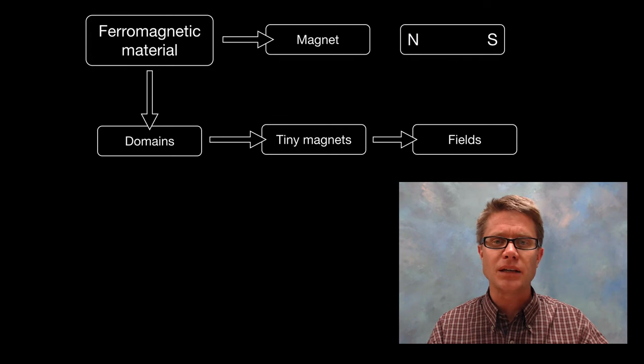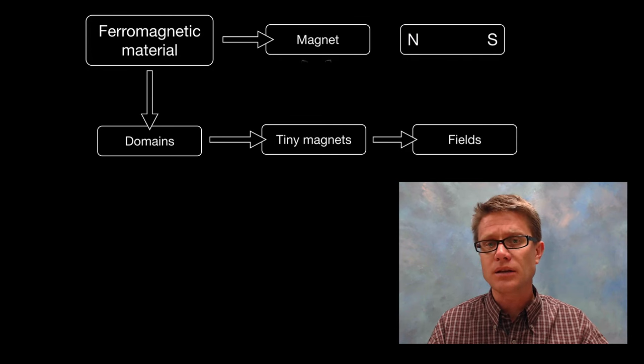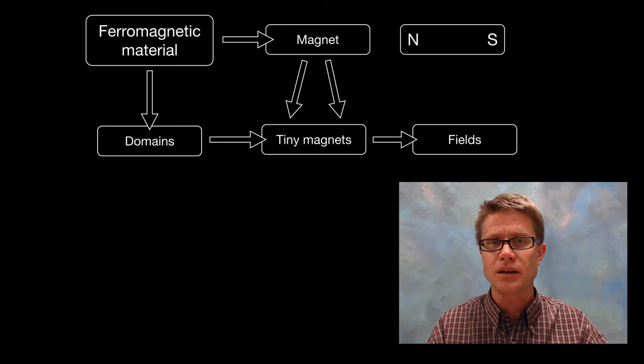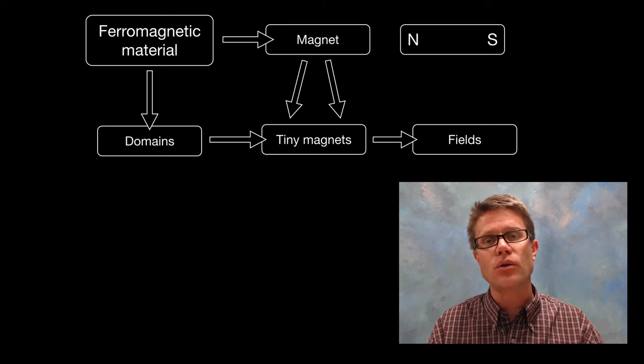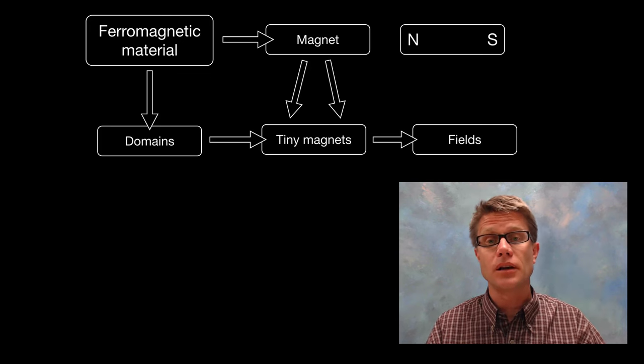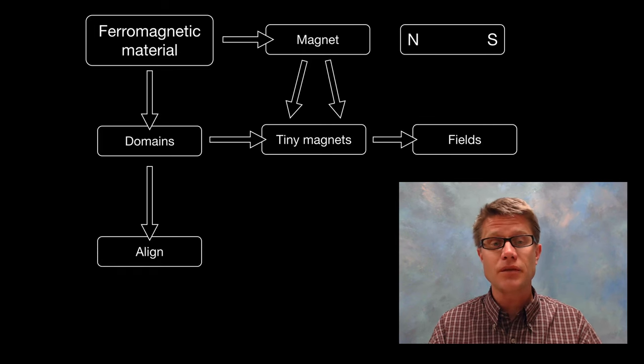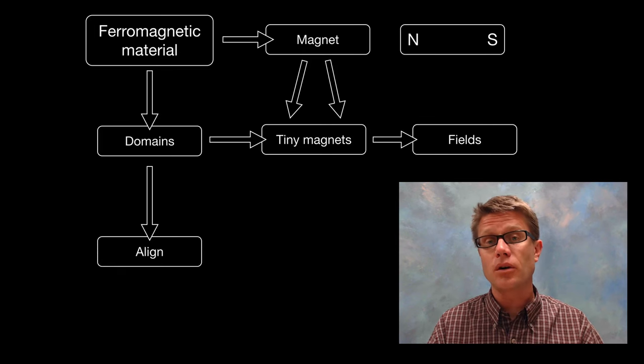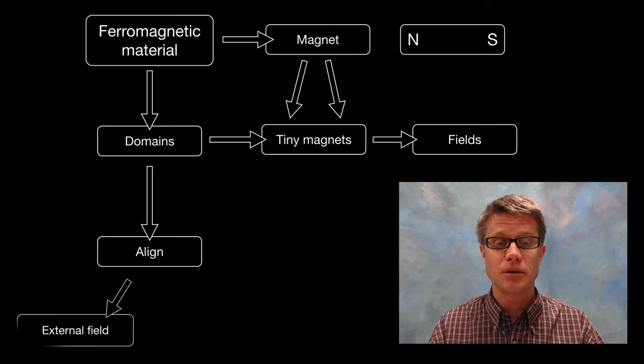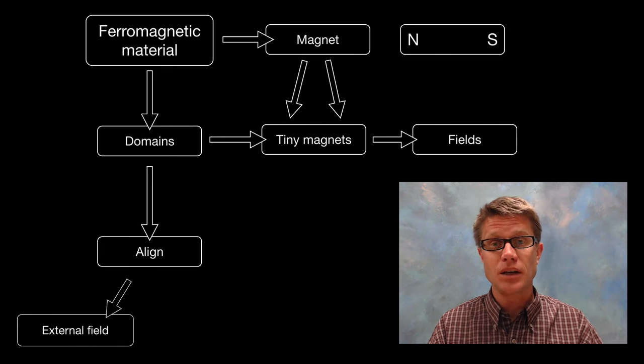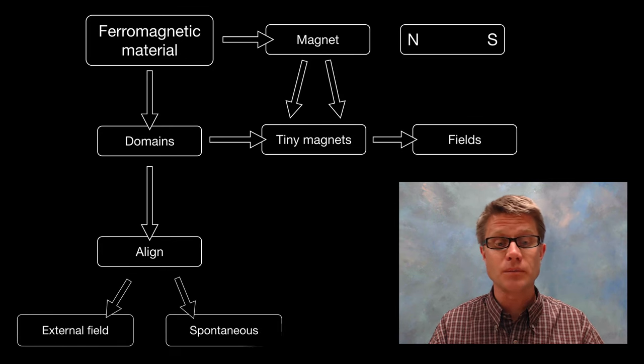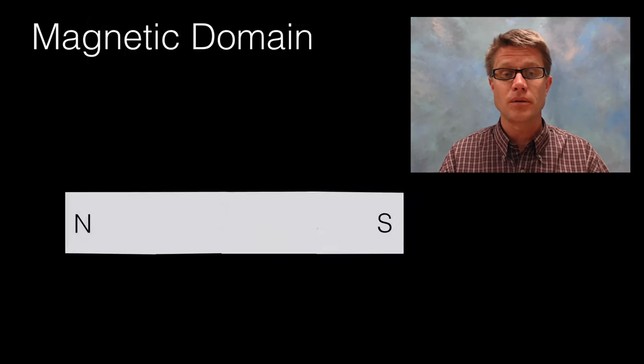If you break a magnet in half, have you broken it? No. You've just created two magnets. You could keep breaking in half over and over and over until you get to the level of these tiny magnetic domains. If these line up, if they align then we've got an overall magnetic ferromagnetic material. They can do this by putting them inside an external field or sometimes it will just spontaneously or naturally occur.